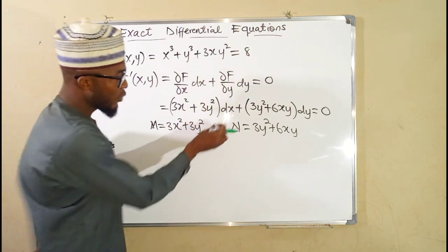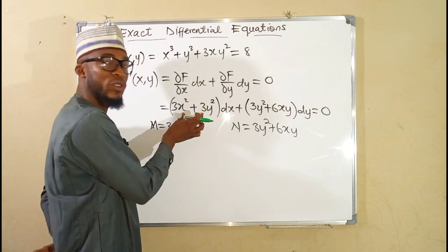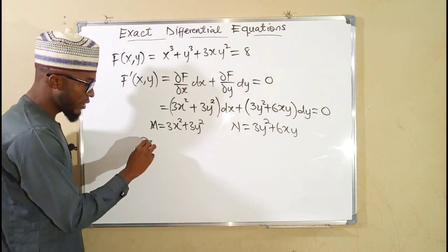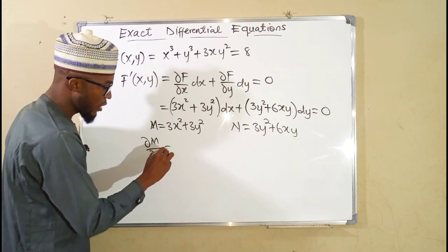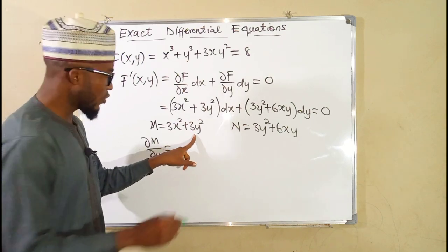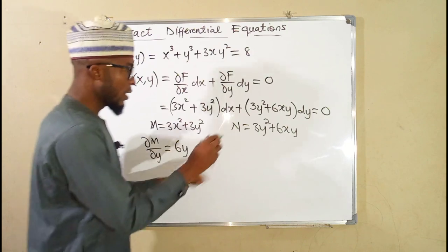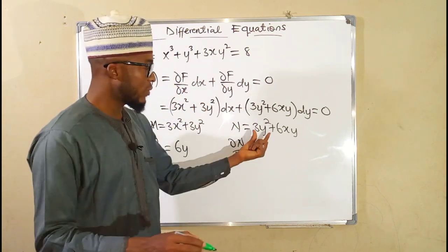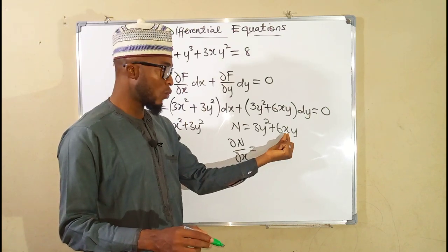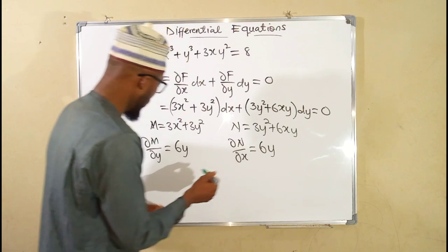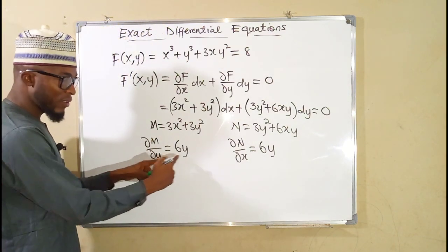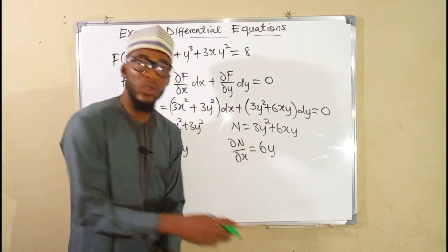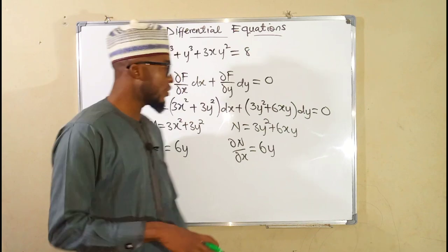To test for exactness, we differentiate M with respect to y and N with respect to x. The partial derivative of M with respect to y: differentiating 3x squared gives zero (constant), and 3y squared gives 6y. The partial derivative of N with respect to x: 3y squared is constant giving zero, and differentiating 6xy with respect to x gives 6y. Since both equal 6y, the condition is satisfied.